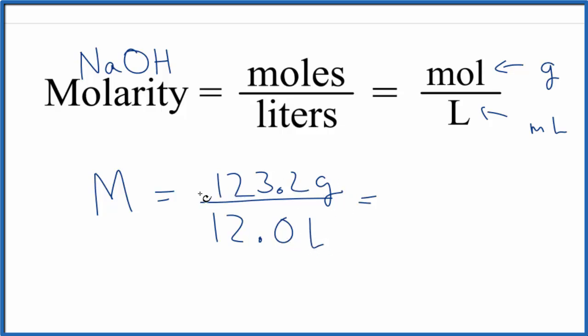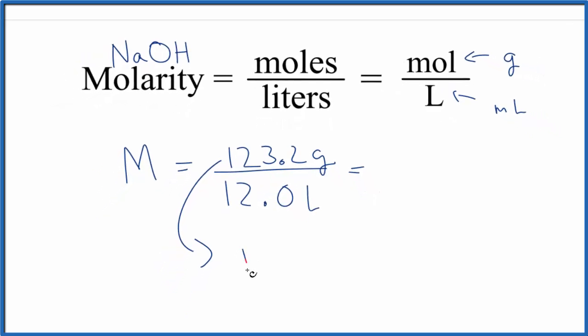We need to convert this to moles. We do that by dividing by the molar mass of sodium hydroxide. If you need help with molar mass, there's a link at the end of the video. When we do this, the grams cancel out and we'll end up with 3.1 moles of sodium hydroxide.